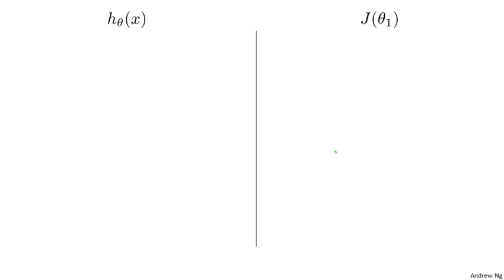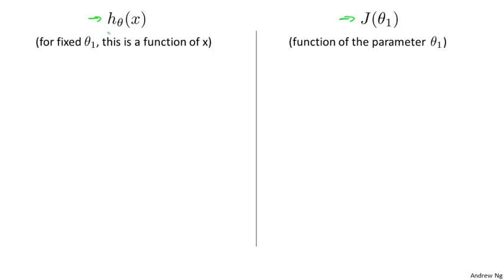Using the simplified definition of the hypothesis and cost function, let's try to understand the cost function concept better. It turns out there are two key functions we want to understand. The first is the hypothesis function, and the second is the cost function. The hypothesis h of x, for a fixed value of theta one, is a function of x — it's a function of the size of the house. In contrast, the cost function J is a function of the parameter theta one, which controls the slope of the straight line.